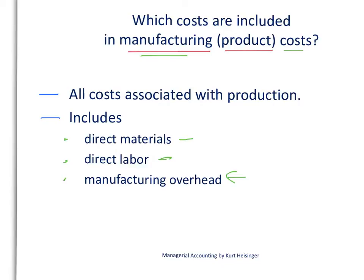So those are the three categories of production costs: direct materials, direct labor, and manufacturing overhead.